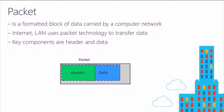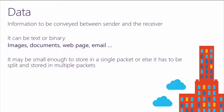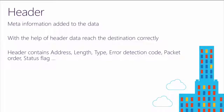We have packets, and in our packets we have headers and data. Data is the information conveyed between sender and receiver — it could be text, binary, image, document, website, or email; it could be small or big. A header is meta-information added to the data. It contains address, length, type, error detection code, packet order, and status flags.